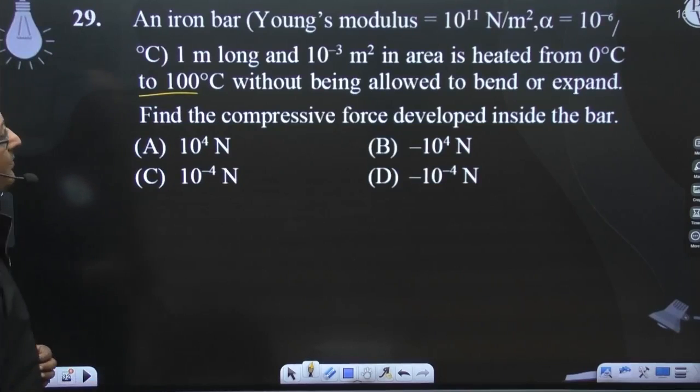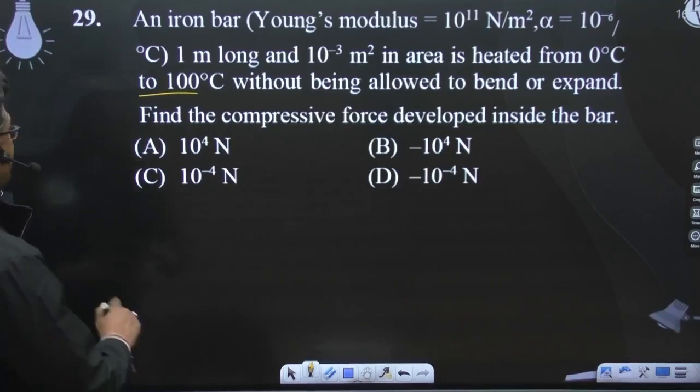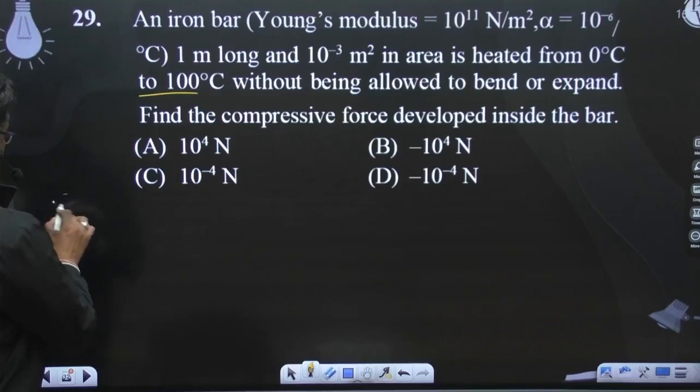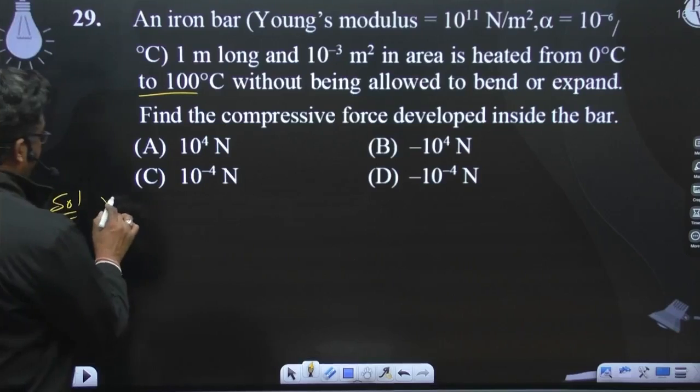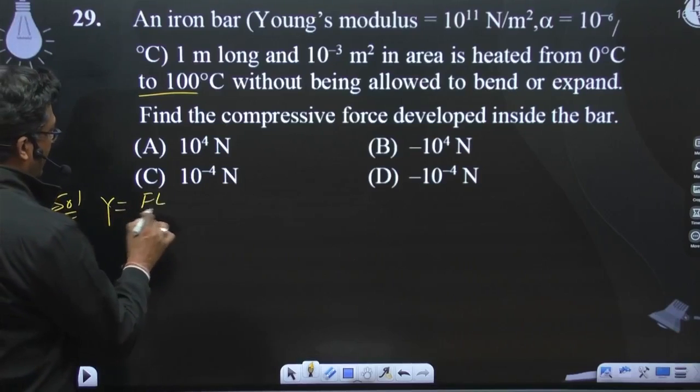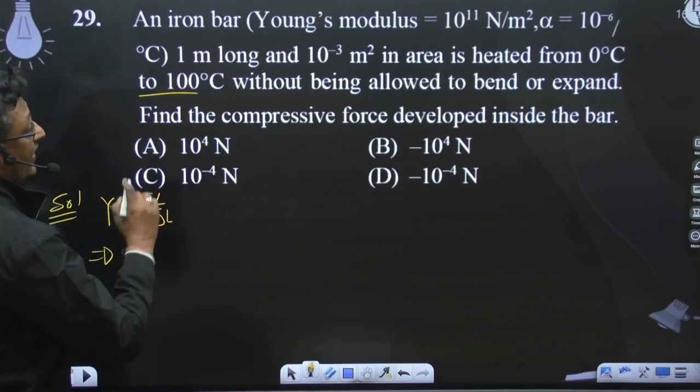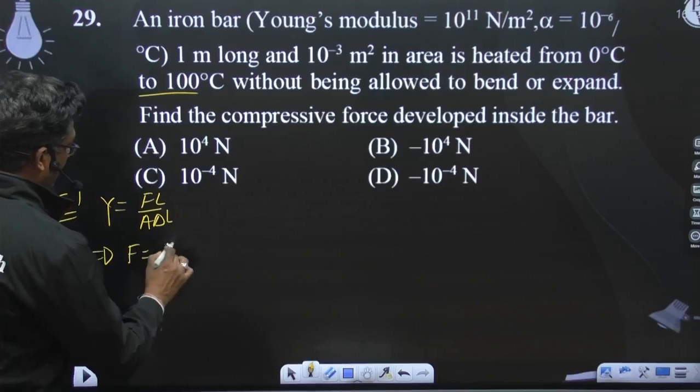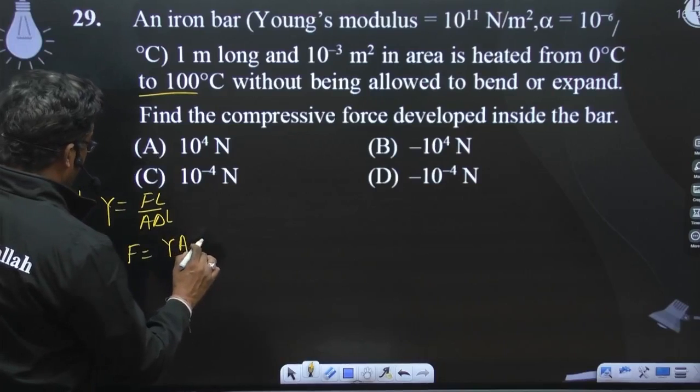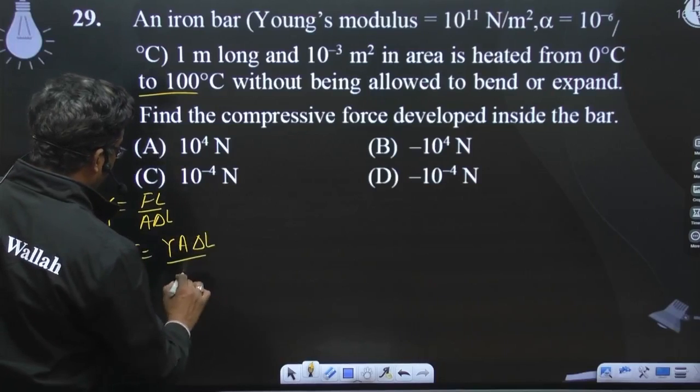So compressive force developed in this case, let's see. We have a formula Y equals FL upon A delta L. On simplifying, you have to calculate force: Y times A times delta L upon L.